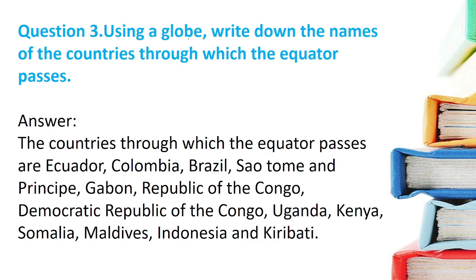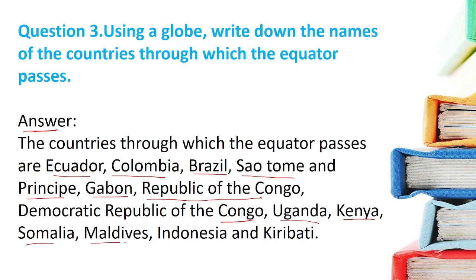Question 3: Using a globe, write down the names of countries through which the equator passes. The countries are: Ecuador, Colombia, Brazil, São Tomé and Príncipe, Gabon, Republic of the Congo, Democratic Republic of the Congo, Uganda, Kenya, Somalia, Maldives, Indonesia, and Kiribati.